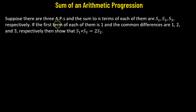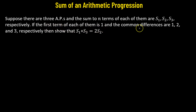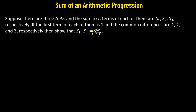Suppose that there are three arithmetic progressions and the sum to n terms of each of them are given by S1, S2, and S3. It is also given that the first term of each of them is 1 and the common differences are 1, 2, and 3 respectively. We need to show that S1 plus S3 equals 2 times S2.